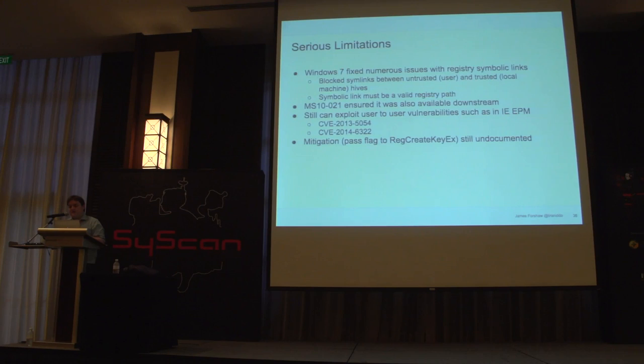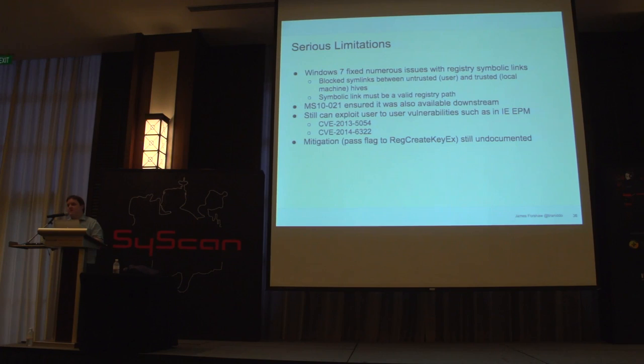Since Windows 7 at least, registry key symbolic links are nowhere near as fruitful as they used to be. They block symbolic links between user hives and system hives — you can't booby trap your registry and get a system service to write registry keys in HKLM. And the symbolic link data must still be a valid registry path, so you can't do funny tricks by going into the object manager. You can still use it for user-to-user attacks — the IE EPM escapes are still good examples, since it still requires no privileges whatsoever.